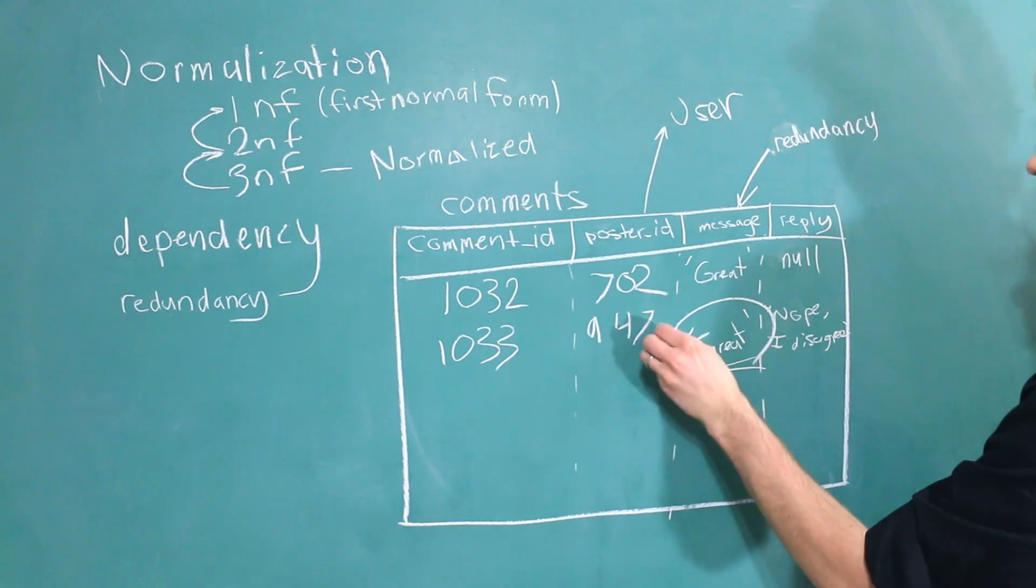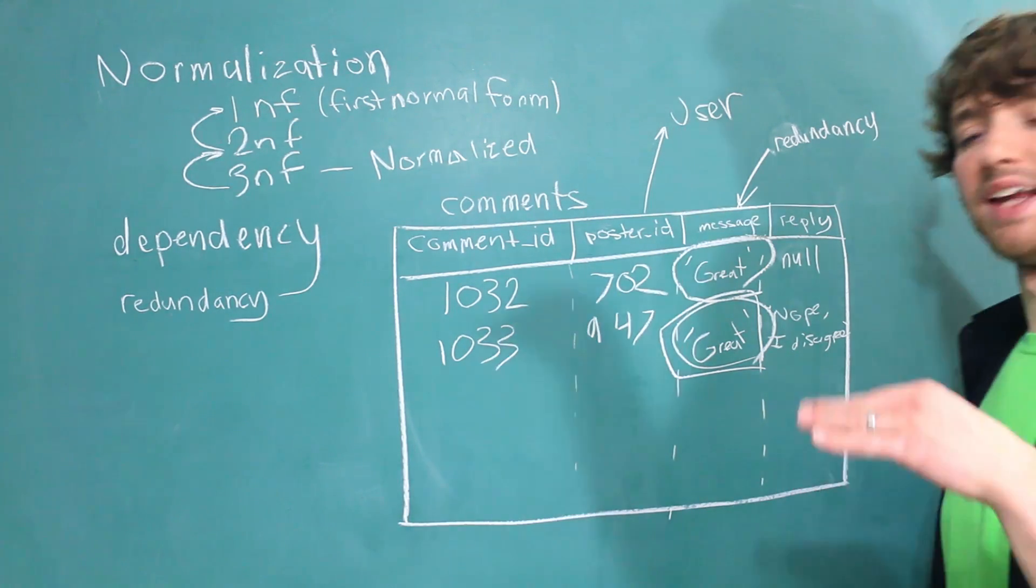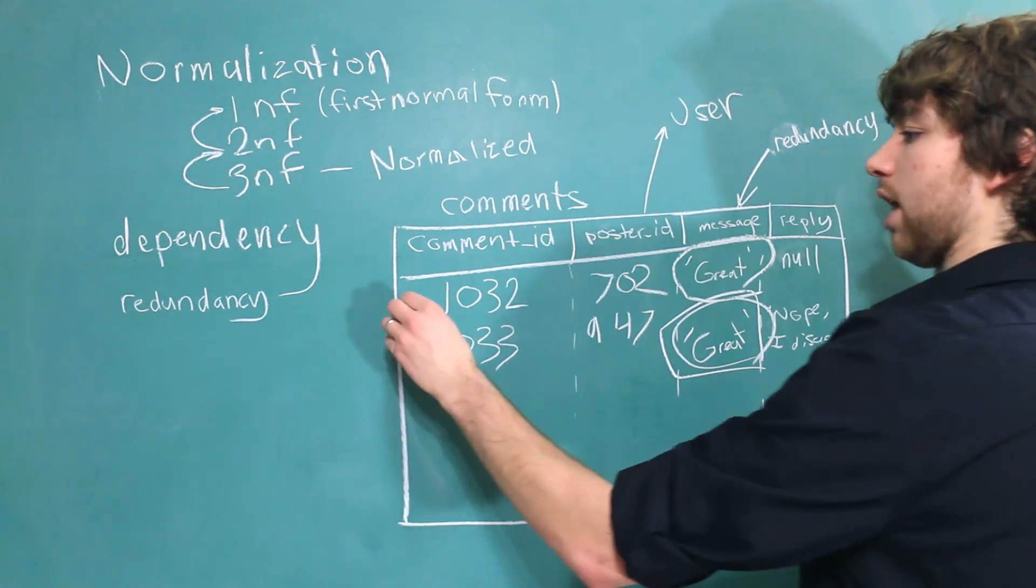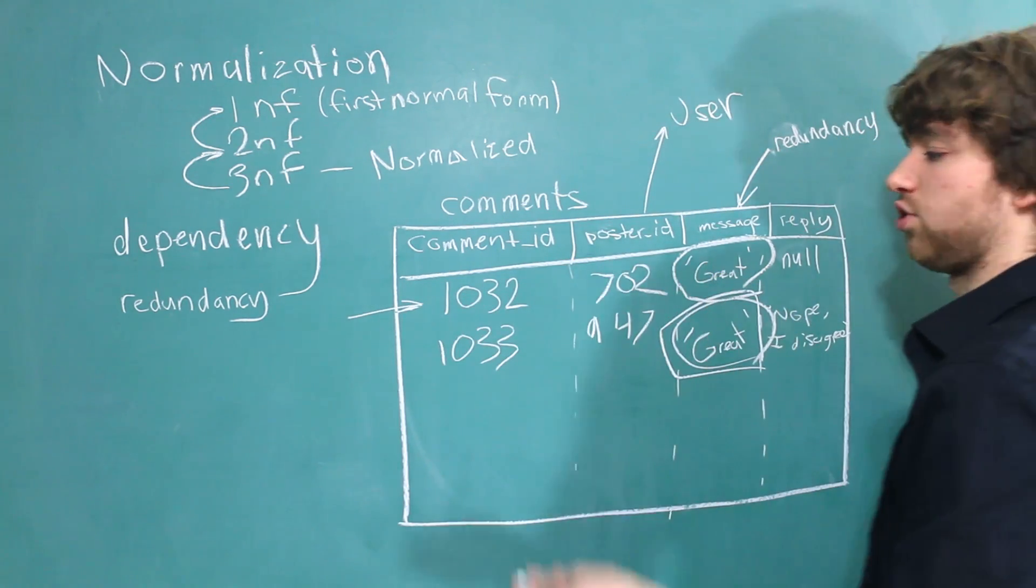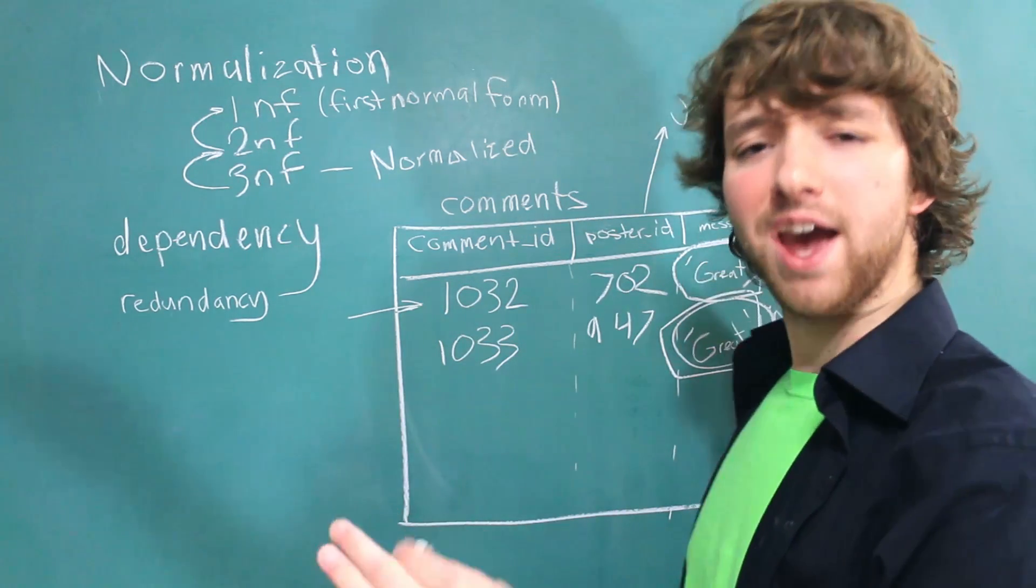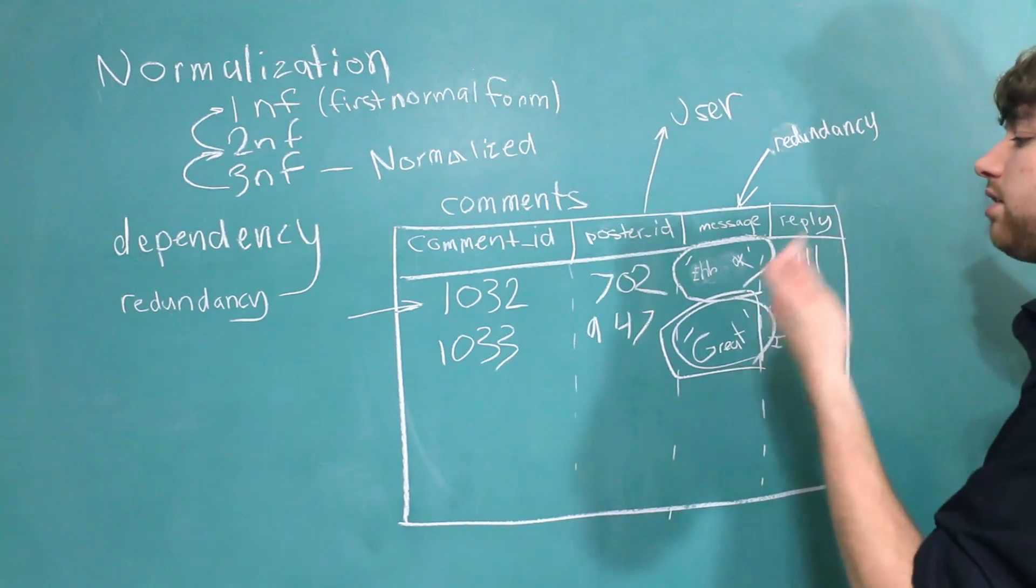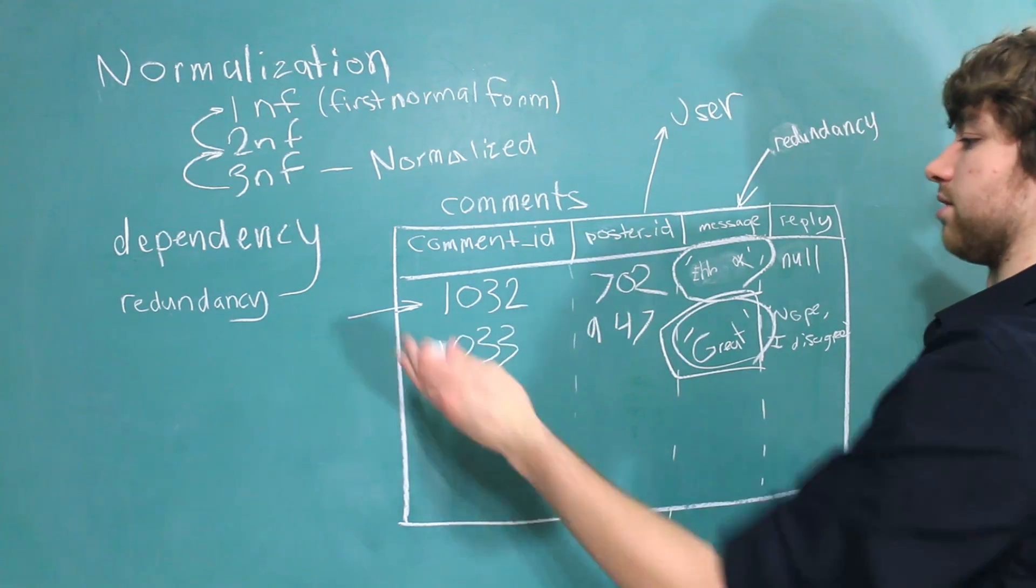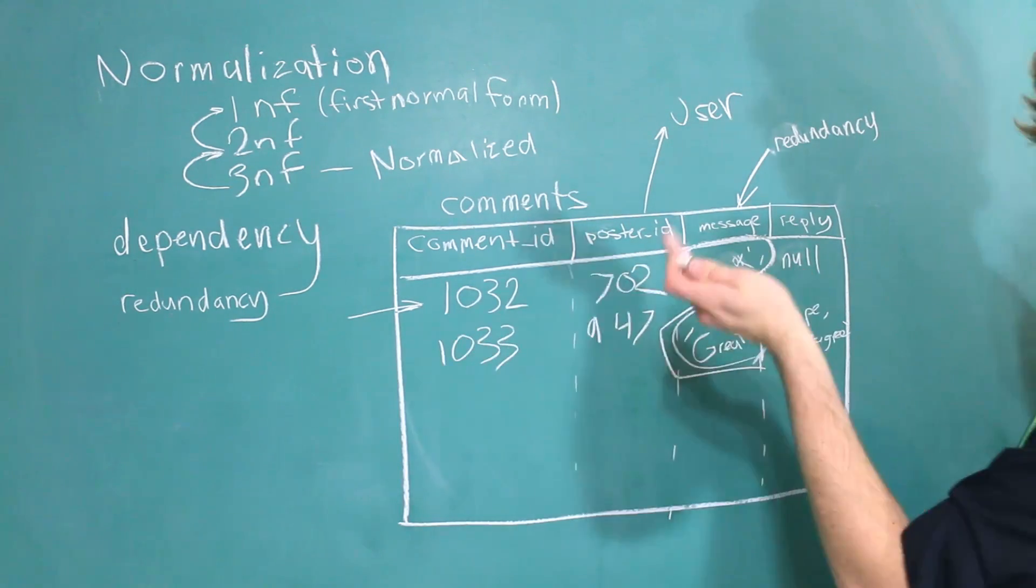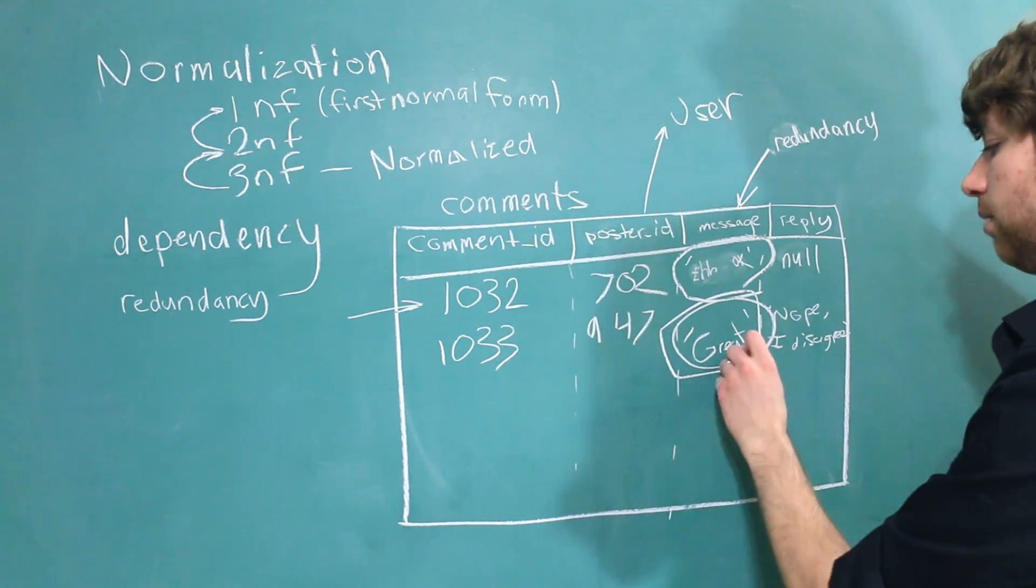And now let's say in our application this person goes back and edits their comment. So he grabs his comment, the guy who posted this one, great, and changes it to eh, okay. So to do this we would use an update statement and say update the message of the comment with the comment ID of 1032 and change it to whatever we want to change it to. But this is dumb because it doesn't update this one.